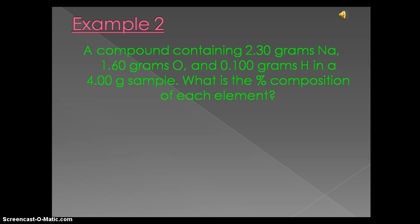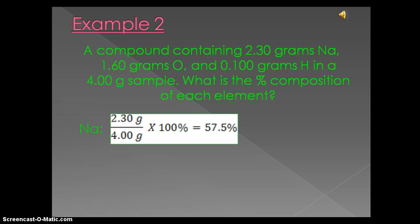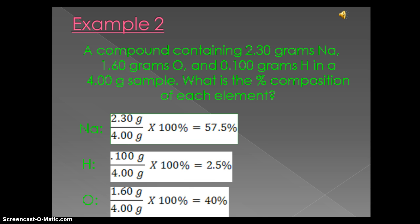To actually solve this problem, we can now plug our given pieces into our formula. So, for example, with sodium, we take 2.30 grams divided by our total mass, which is 4 grams, multiply it times 100%, and 57% of this compound is made up of sodium. Doing the same for hydrogen, we divide 0.1 grams by 4 grams, multiply that times 100%, and this compound is made up of 2.5% hydrogen. Lastly, with oxygen, taking 1.0 grams, dividing that by the total mass of 4 grams, multiplying that times 100%, 40% of this compound is made up of oxygen.